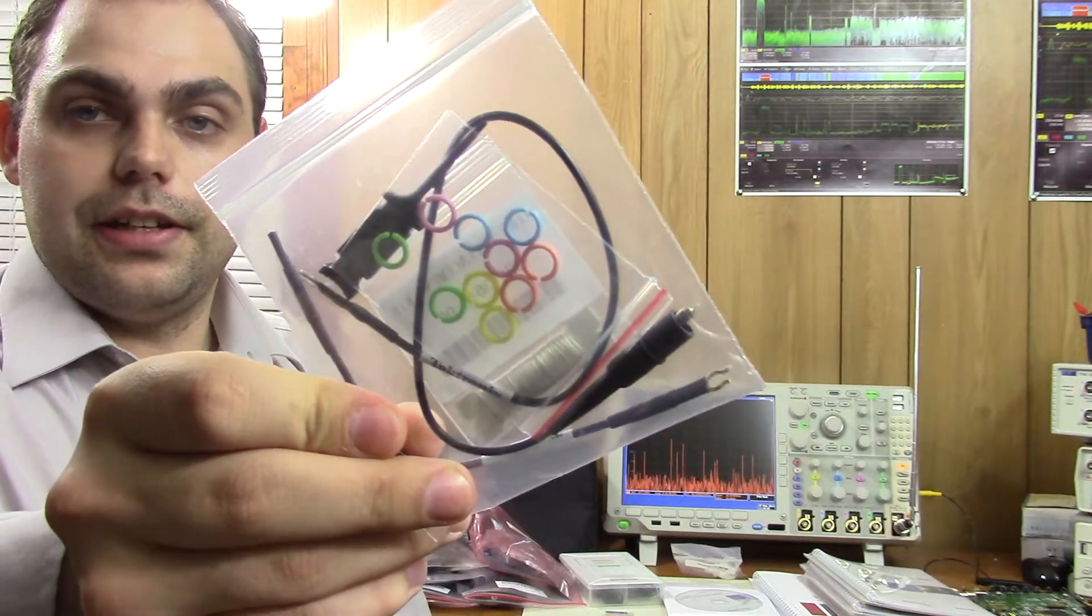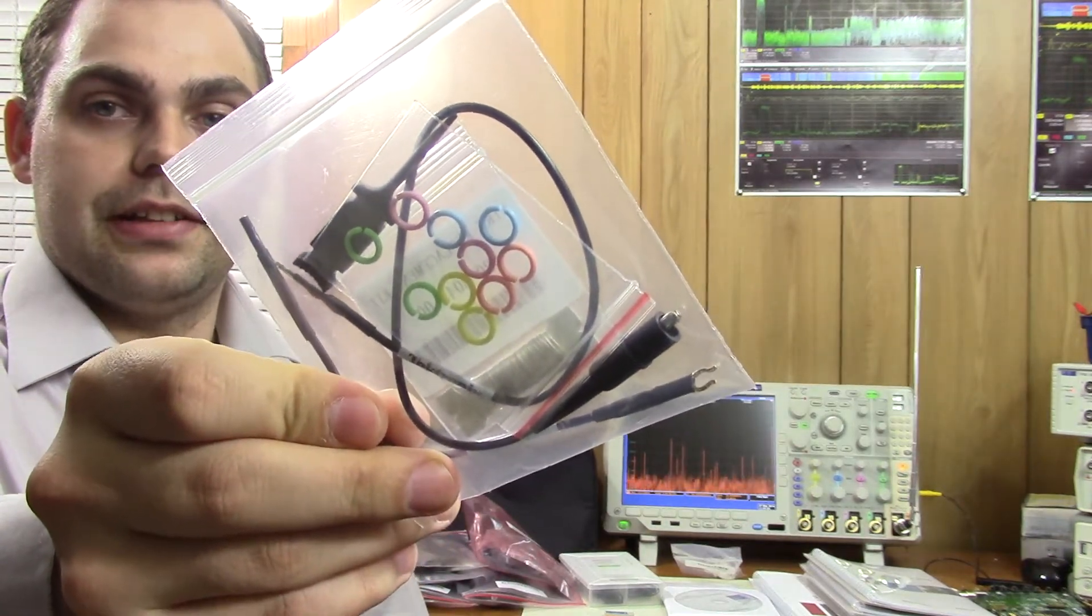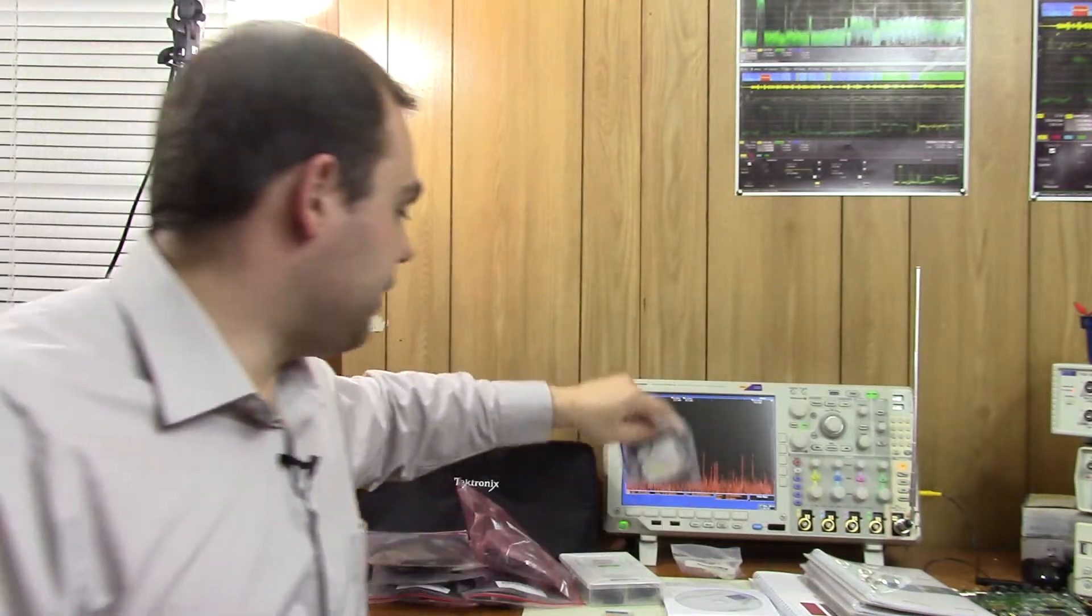Of course, you're getting some probe accessories here. You're getting those color markers that you can use to differentiate the different channels, and that correspond to the channel colors here on the oscilloscope, and a bunch of other things in here. Very neat.